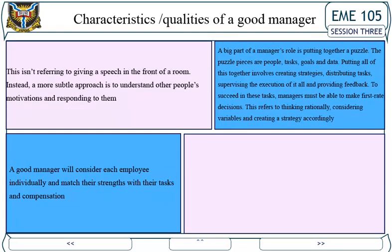This isn't referring to giving a speech in front of a room. Instead, a more subtle approach is to understand other people's motivations and responding to them. A good manager will consider each employee individually and match their strengths with their tasks and composition. A big part of a manager's role is putting together a puzzle — the puzzle pieces are people, tasks, goals, and data. Putting all of these together involves creating strategies, distributing tasks, supervising the execution of each, and providing feedback. To succeed in these tasks, managers must be able to make first-rate decisions. This refers to thinking rationally, considering variables, and creating a strategy accordingly.